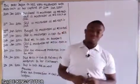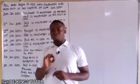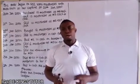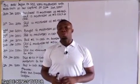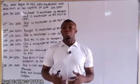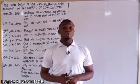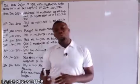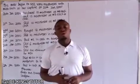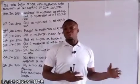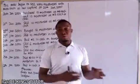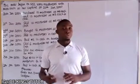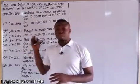I want to continue our series on the cash book. We did an introduction video where we introduced the cash book and the types of cash book — we explained the theoretical aspect of the single column, the double column, and the three column cash book. Now I want to work through a question relating to a single column cash book.